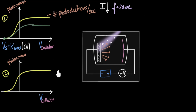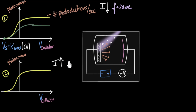Now let's get a little more adventurous for the second case. Let's increase the intensity of light — make it brighter — but decrease the frequency. Can you predict what the new graph is going to look like? Pause and try.